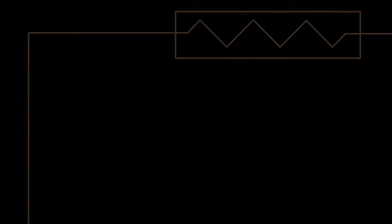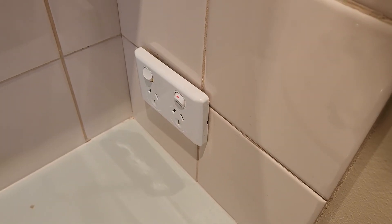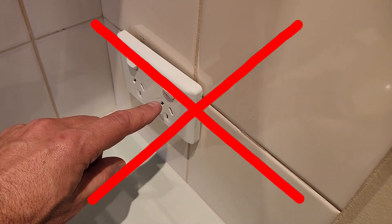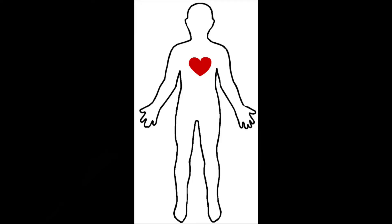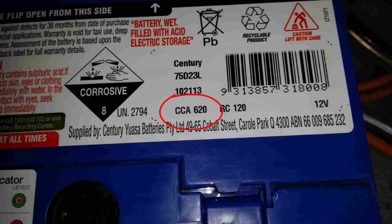Understanding these principles may explain things that have puzzled you. For example, you know you'll get electrocuted if you poke your fingers into a domestic power point — do not try this at home. It's not actually the voltage that kills you, it's the current. You only need about 9 milliamps of current across the heart to stop it beating, which is about the amount of current that flows through an LED. But a typical car battery can deliver hundreds of amps — in this case 620 — which is enough to kill you many hundreds of times over.